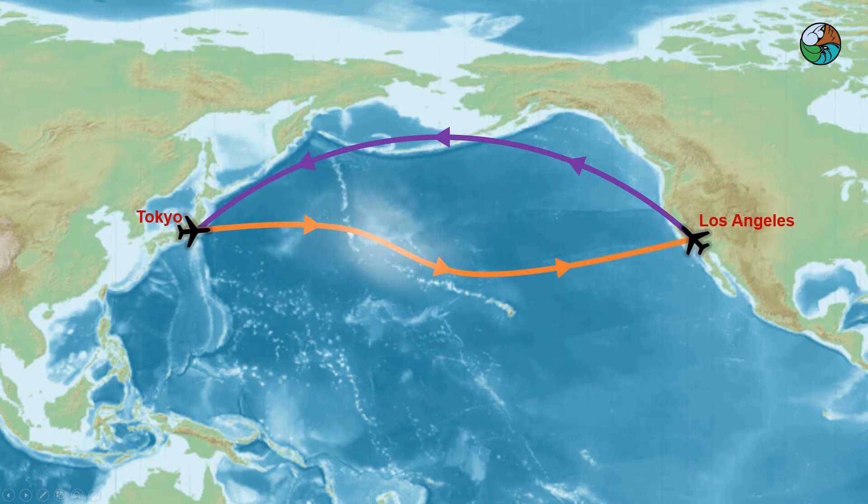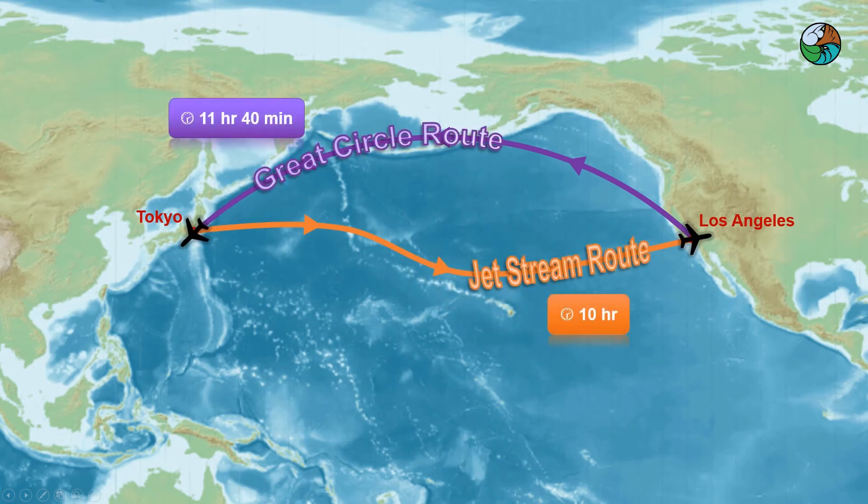At the normal flying altitude, the jet stream can be as strong as 160 km per hour. The tailwind greatly reduces the flight time.